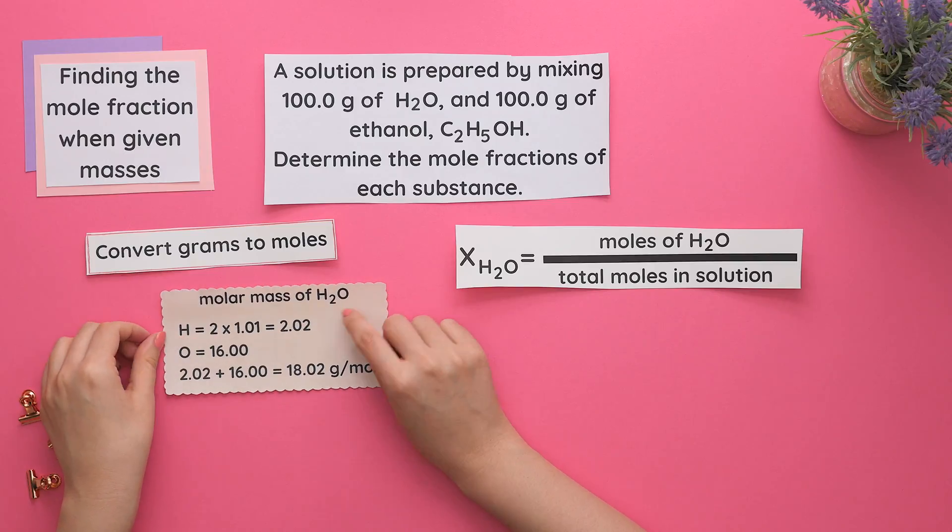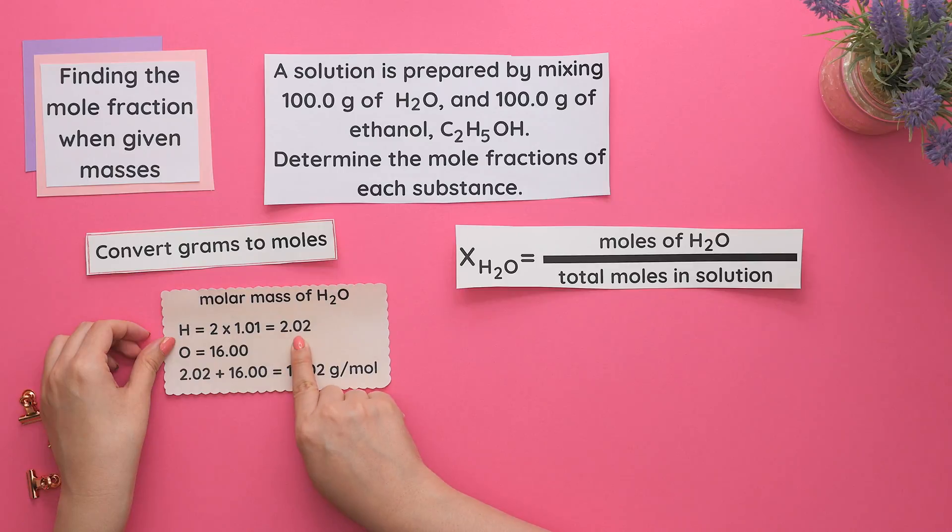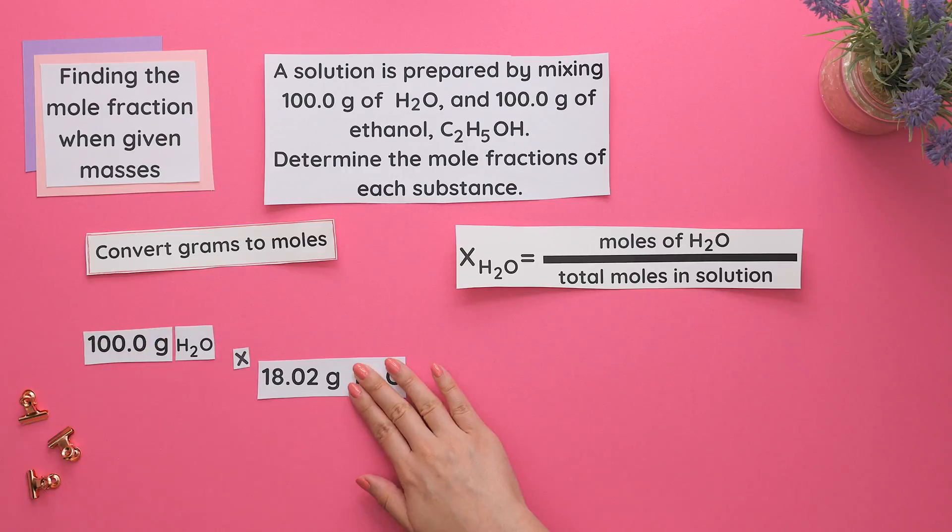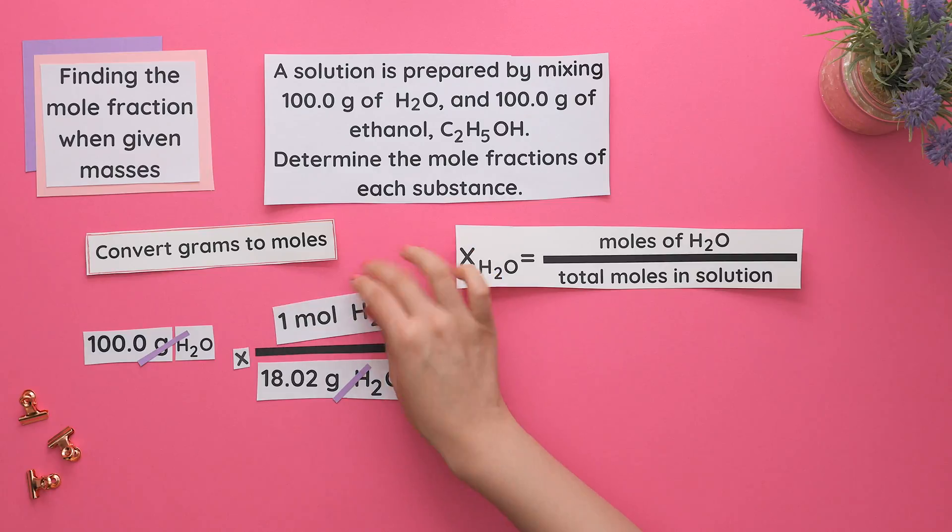For water, we have two hydrogens. Multiply that by the mass of hydrogen and we get 2.02. There's only one oxygen, so our mass is 16. Add all of these up to get the molar mass of water. Align the grams so they can cancel, place one mole of water on top, and we just found our moles of water.